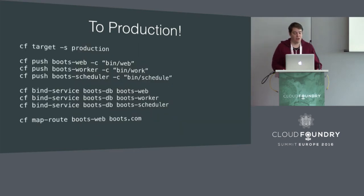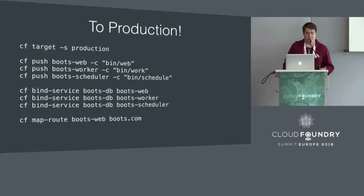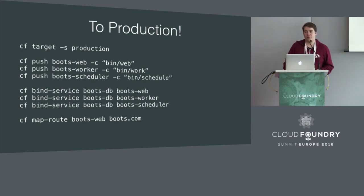In production, you would normally target your production space, push those same three apps again, bind those same three services again, and map your production route to the new application. This seems like extra work, because we've already pushed our bits, we've already staged our bits, we have our droplet.